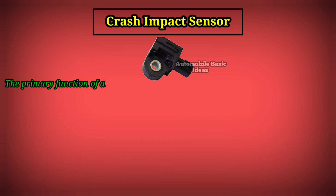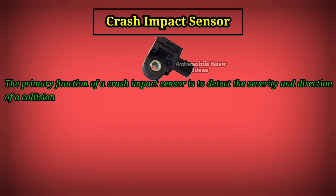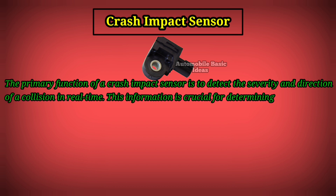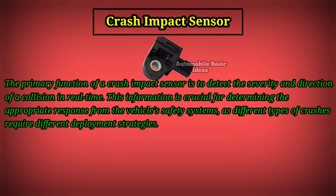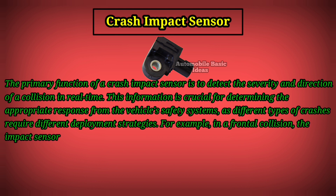The primary function of a crash impact sensor is to detect the severity and direction of a collision in real time. This information is crucial for determining the appropriate response from the vehicle safety systems, as different types of crashes require different deployment strategies. For example, in a frontal collision, the impact sensor must recognize the rapid deceleration of the vehicle.